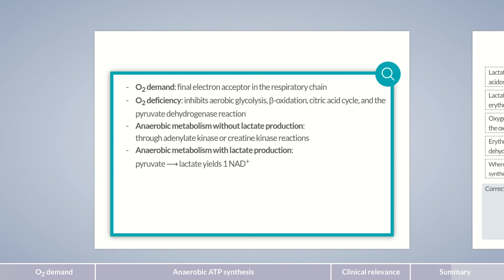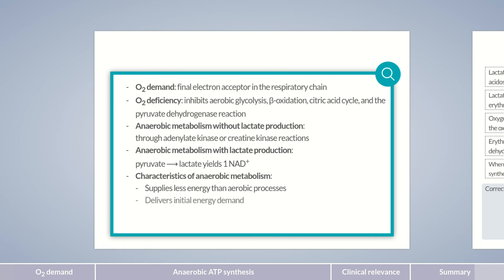Pyruvate is converted to lactate, thereby replenishing just enough NAD+ to continue producing pyruvate from glucose. Anaerobic processes provide significantly less ATP than aerobic processes: anaerobic glycolysis yields only two molecules of ATP per glucose, compared to 32 ATP molecules in aerobic glycolysis. Anaerobic metabolic processes are further required to bridge the initial period of aerobic processes, to provide energy to cells with depleted oxygen levels, as well as in cells that don't possess mitochondria, such as erythrocytes.